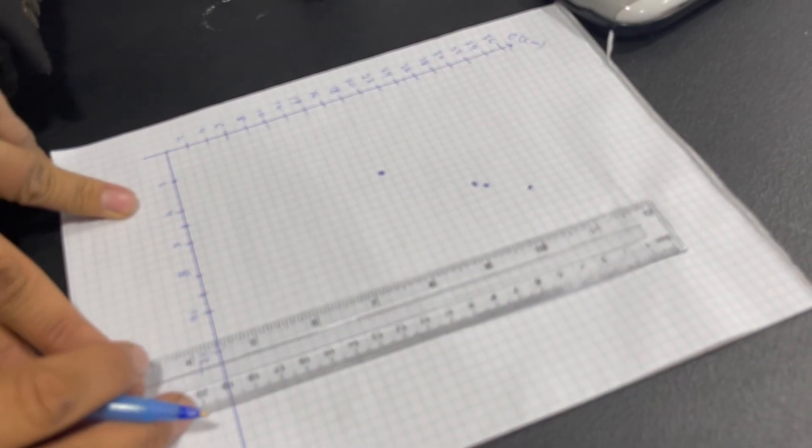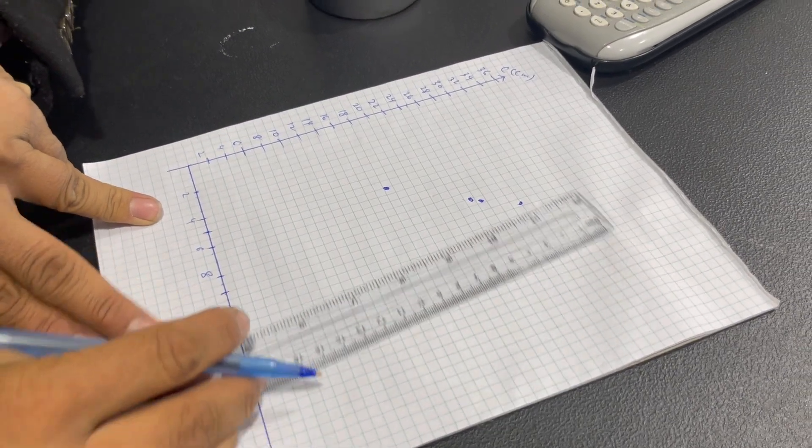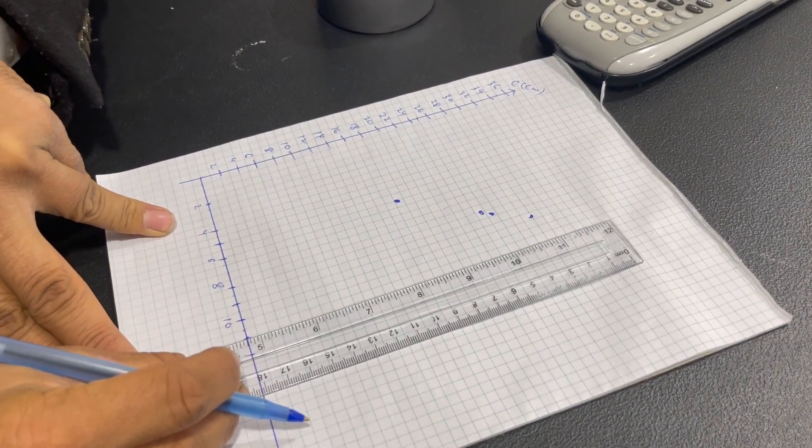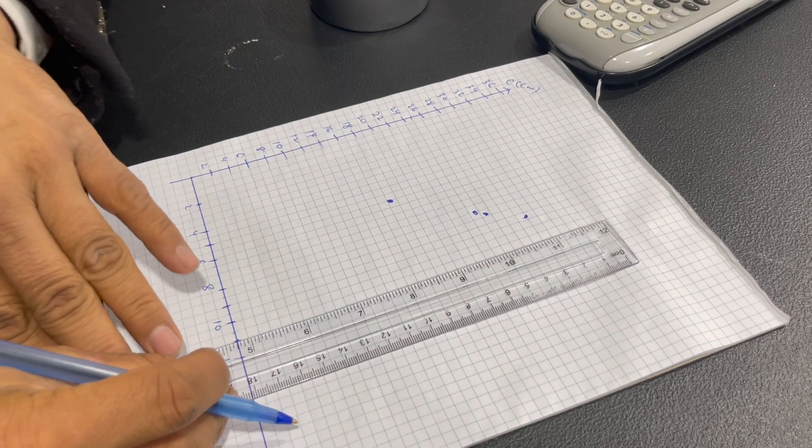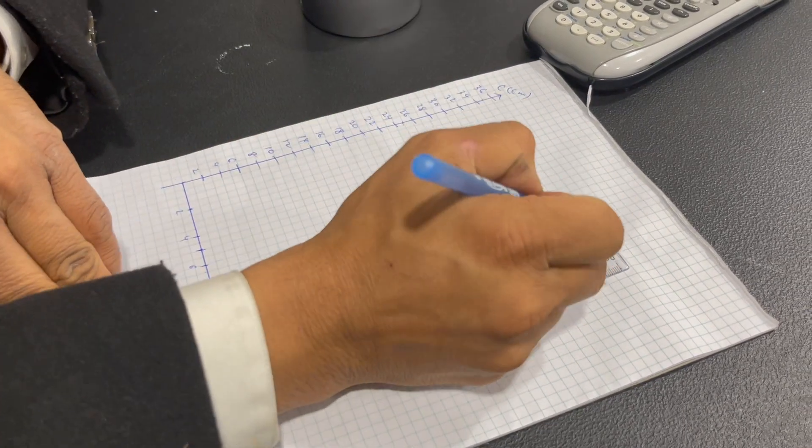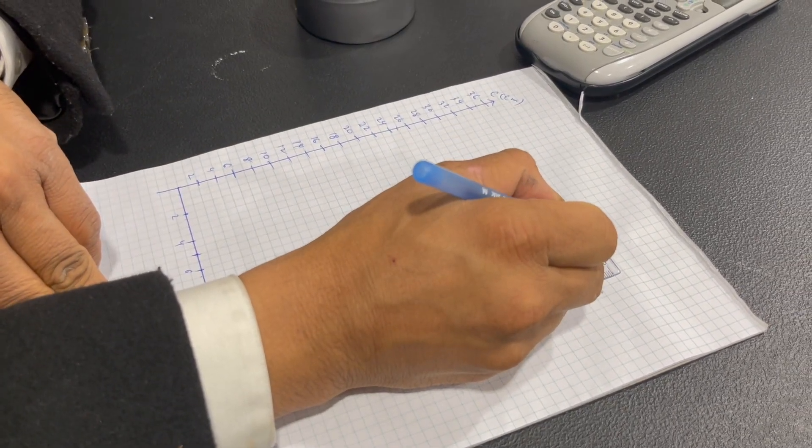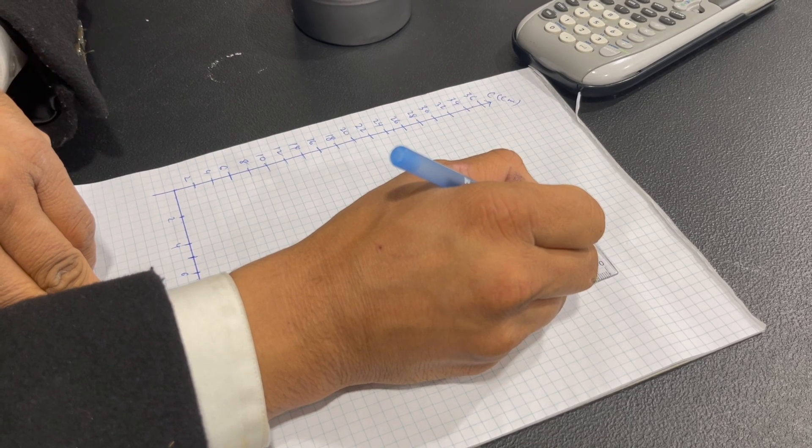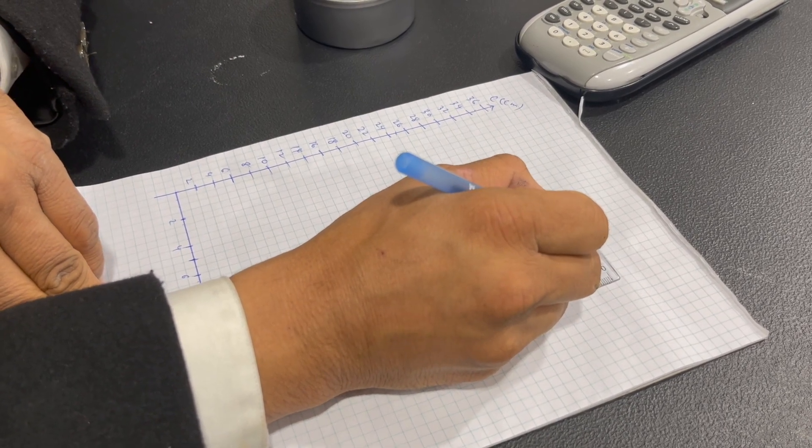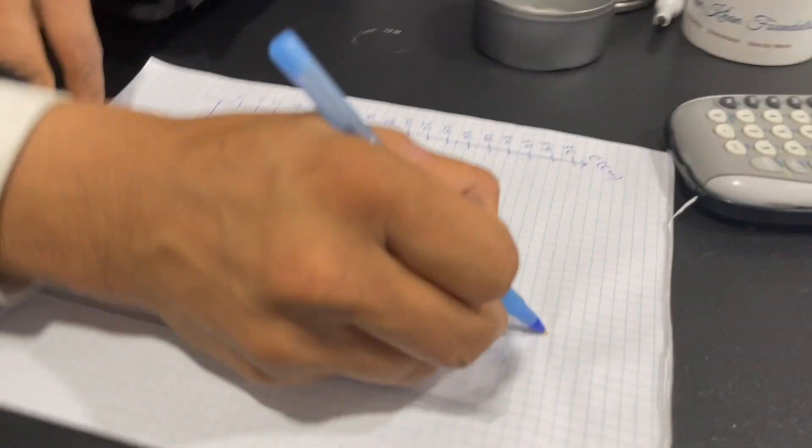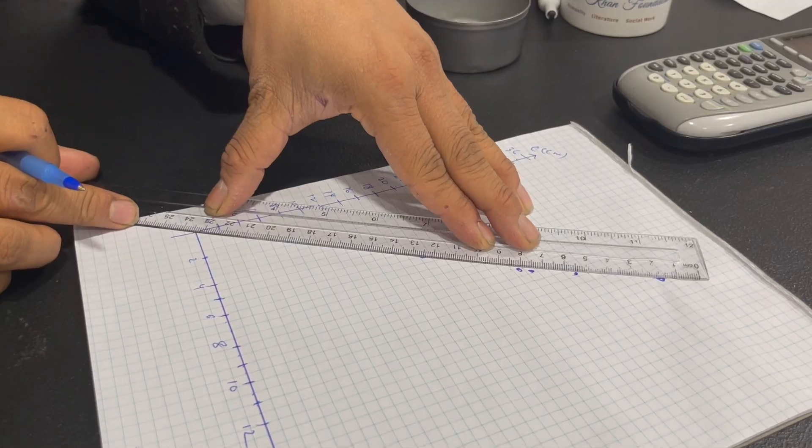11.1. This is 11.1. And 35.6. So this is 35. This is 30. This is 35. Then this is 35.6. Alright. So let's do it.